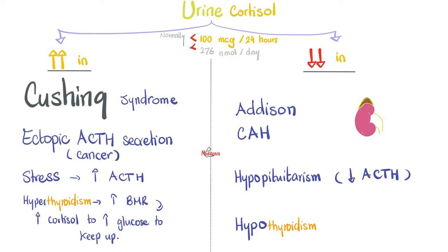Causes of low cortisol in the urine: Addison disease, or congenital adrenal hyperplasia, where the adrenal gland cannot make cortisol. When cortisol goes down, ACTH goes up and tries to stimulate the adrenal cortex more, causing it to get bigger and bigger — hyperplasia — but it still cannot secrete cortisol. The 21-hydroxylase deficiency is one of the most important topics in medicine and pediatrics.